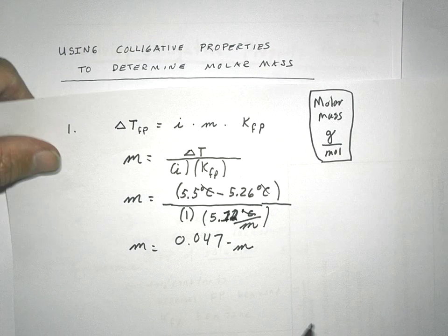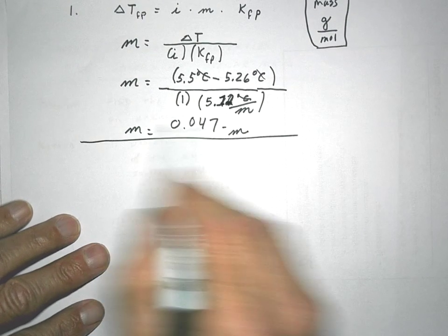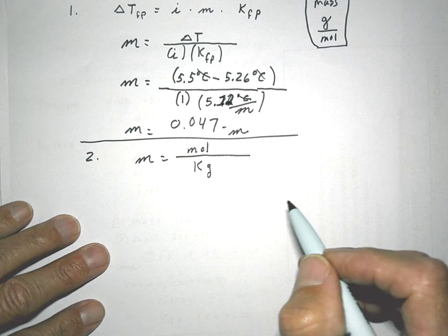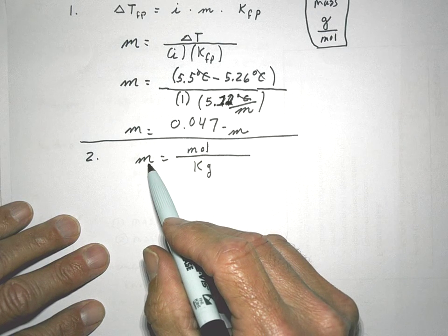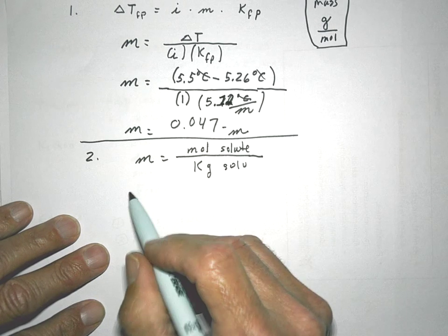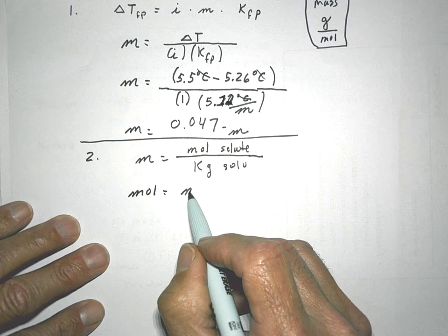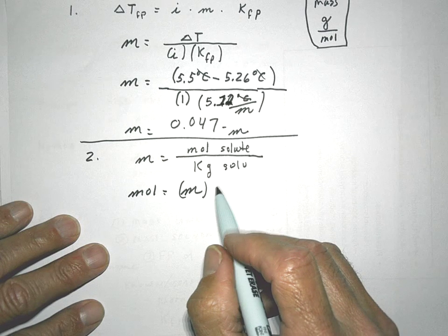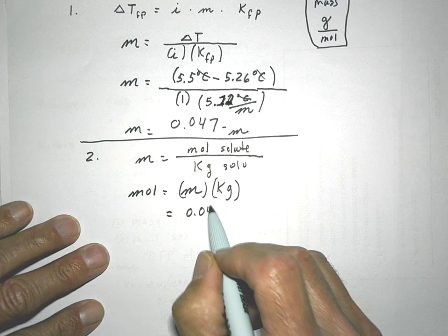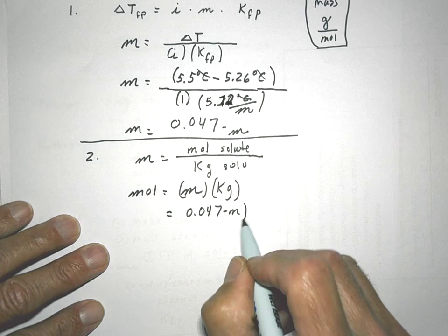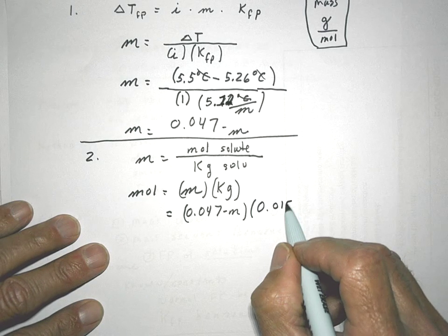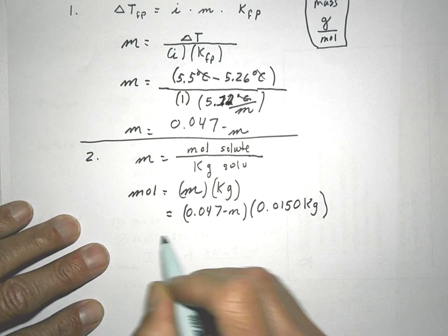Step one is done. Next, we know that molality is moles of solute per kilogram of solvent. Well, in this case, I just calculated molality, and I'm given the kilograms of the solvent in the problem. This, again, is the solute. So I can rearrange this and solve for moles of the solute, which is the unknown substance. So moles of the unknown would be the molality, which I've calculated in the first step. Kilograms of the solvent was given in the problem, 15 grams of benzene. Let me change that to kilograms.